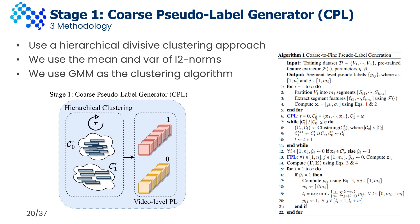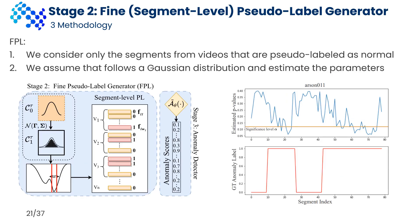At the end of the CPL stage, all videos in the training set are assigned a video-level pseudo-label based on their cluster index. In the next step, all segments from the normal set are labeled as normal. However, most segments in anomalous videos are also normal due to the temporal localization of anomalies, so further refinement of the coarse video-level labels is required. To achieve this, we treat the detection of anomalous segments as a statistical hypothesis testing problem, where the null hypothesis is that a given video is normal. By modeling the feature distribution under the null hypothesis as a Gaussian distribution, we identify anomalous segments by estimating their p-values and rejecting the null hypothesis if the p-value is less than a significance level alpha.